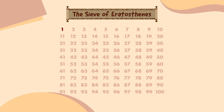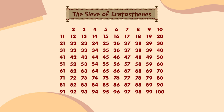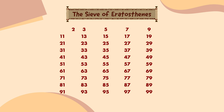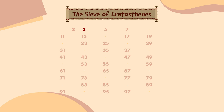We'll start with the numbers that can be divided by 2: 4, 6, 8, 10, and so on. Now numbers that can be divided by 3: 9, 15, 21, and so on. 4 has already gone, so 5's next. 6 has gone, so 7's next.